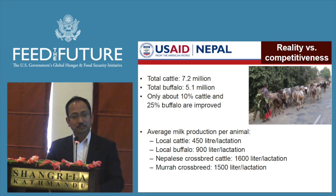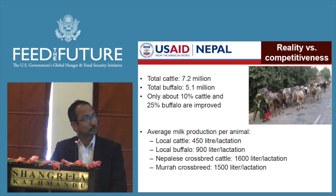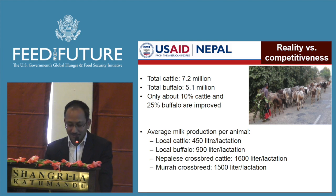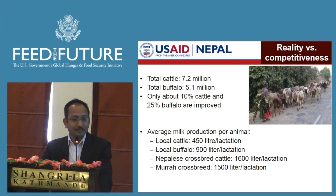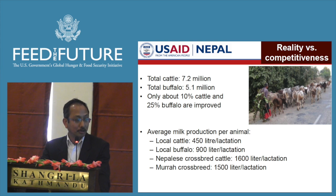What are the realities in livestock and competitiveness in the country? Out of total livestock populations of about 7 million cattle and 5 million buffalo, only 10% of cattle and 25% of buffalo are improved breeds — the rest are all local breeds. Because of that, local breed cattle produce only 450 liters of milk per lactation and 900 liters in the case of buffalo. There is a long way to reach the potential. Experience shows that Nepalese crossbreed — not pure breed — cattle and buffalo have recorded 1,600 and 1,500 liters per lactation respectively.